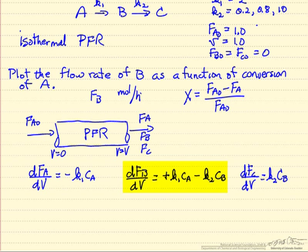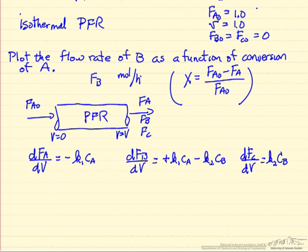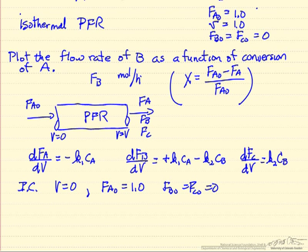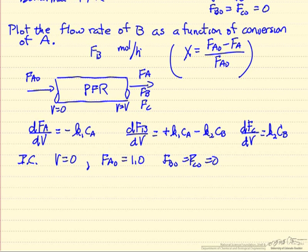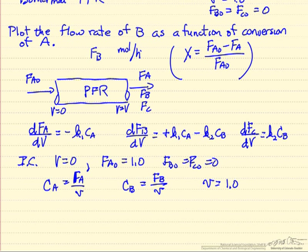We're interested in how the flow rate of B depends on the conversion of A entering the reactor. To solve these differential equations we need initial conditions: at V equals 0, FA0 equals 1, and FB0 and FC0 are equal to 0. We also need the relationship between concentration and flow rate: concentration equals molar flow rate over volumetric flow rate, for both A and B. The volumetric flow rate is given as 1, so we have everything we need to substitute in and solve.